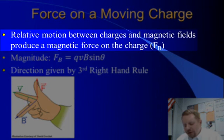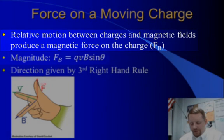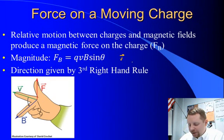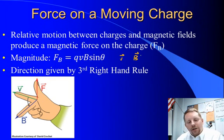Relative motion between charges and magnetic fields produces a magnetic force on the charge. Moving charges create magnetic fields, and charges moving through magnetic fields feel a force. The magnitude of this force, force magnetic, F sub B, is equal to the charge, q, times its velocity, v, meters per second, times the magnetic field strength, B in Tesla, times the sine of the angle between the velocity vector and the direction of the magnetic field. And you can find its direction using the third right hand rule.